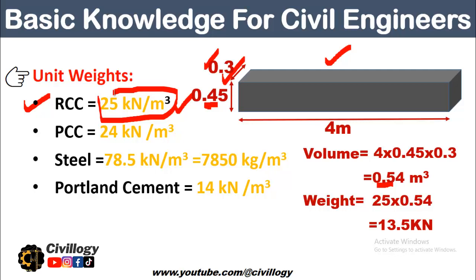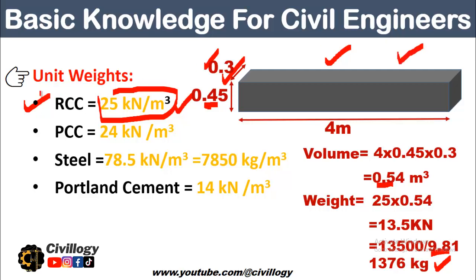Since 1 kg is equal to 9.81 Newtons (normally taken as 10 Newtons), if we take 13.5 kN and multiply by 1000 to get 13,500 Newtons, then divide by 9.81, we get the mass of 1,376 kg. So you can calculate the weight of any structural member if you know these unit weights - these are very important for civil engineers to remember. Similarly, you can calculate the weight of steel if you know its unit weight, and Portland cement has a unit weight of 14 kilo-Newtons per cubic meter.